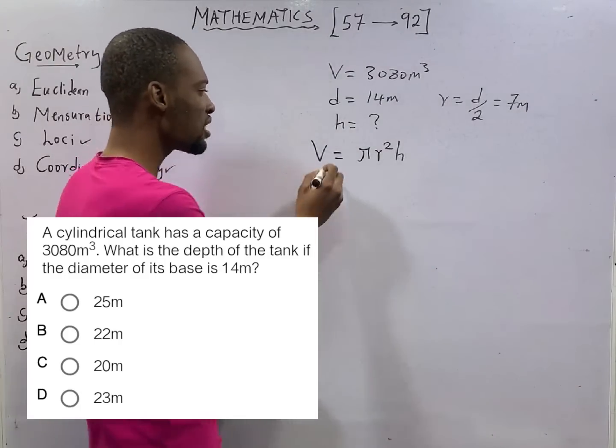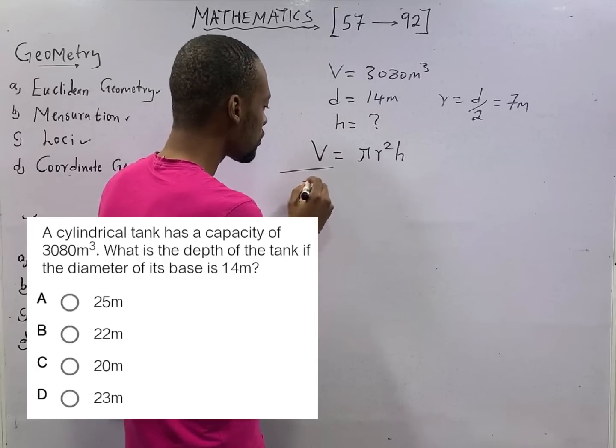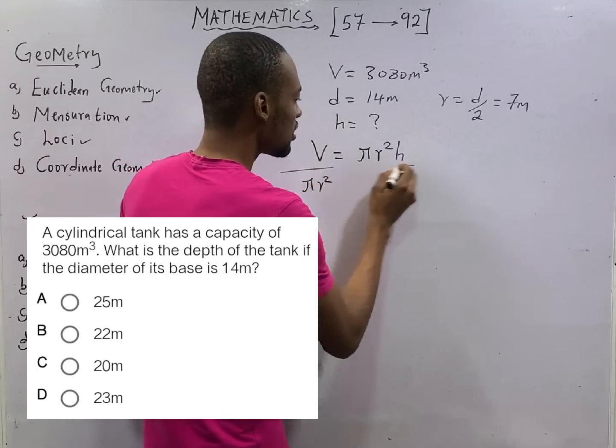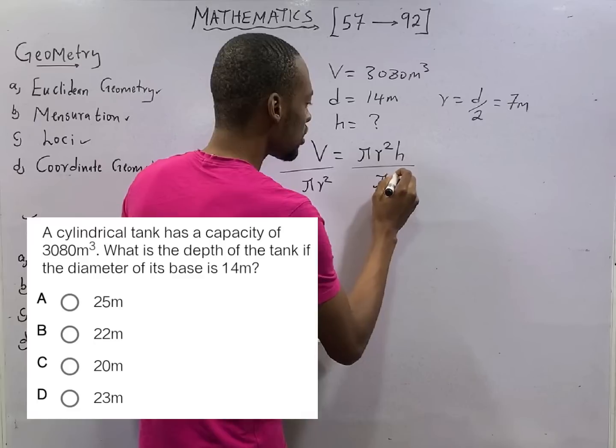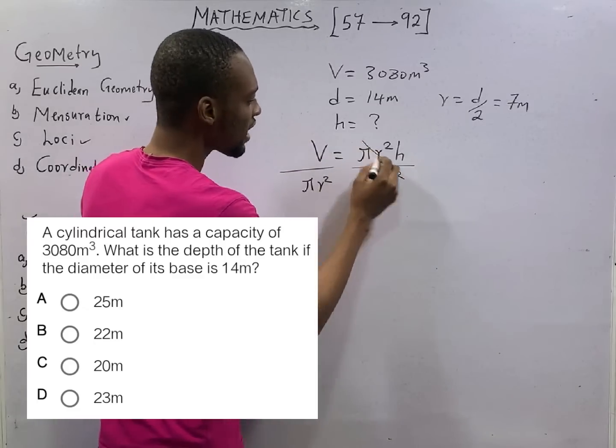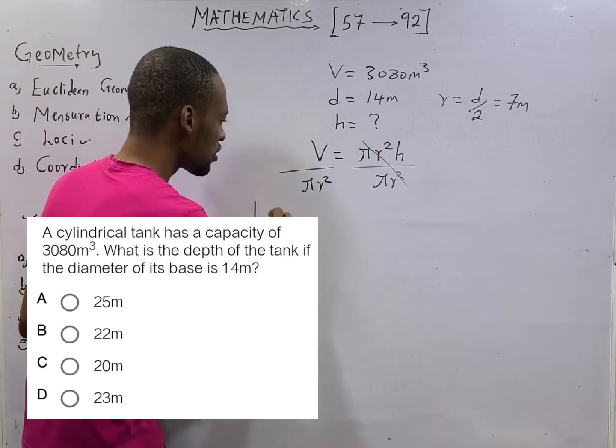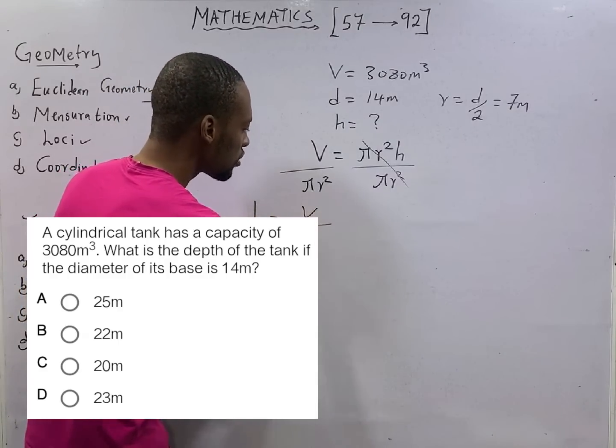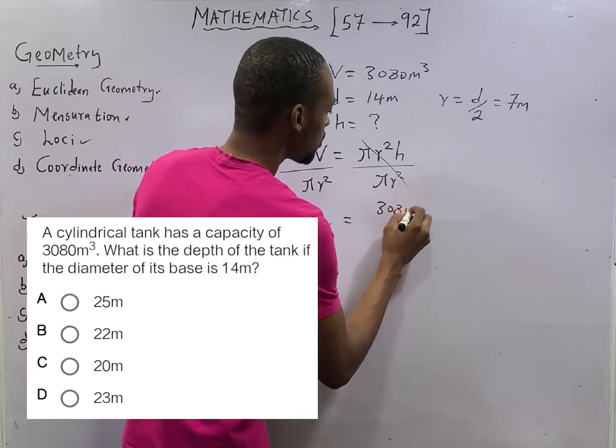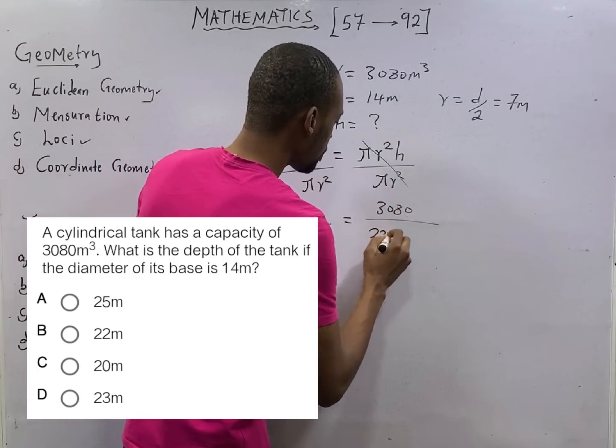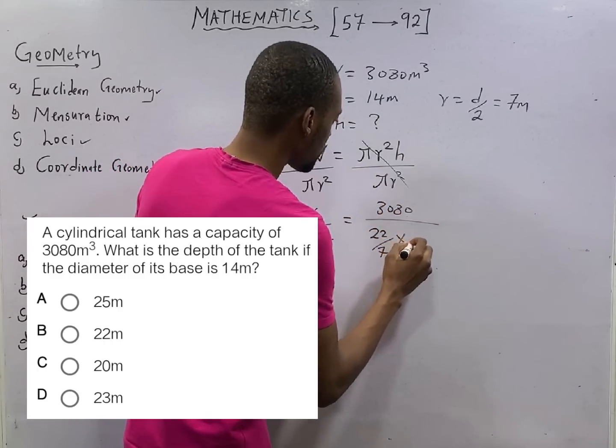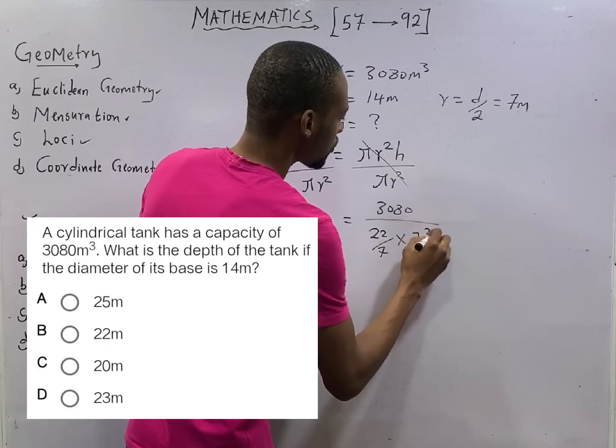Let's make height subject of formula. Here becomes pi r square. Pi r square divided by pi r square is 1. h is therefore V over pi r square.